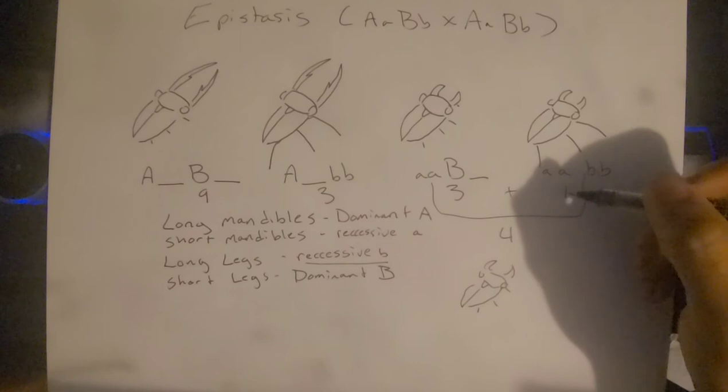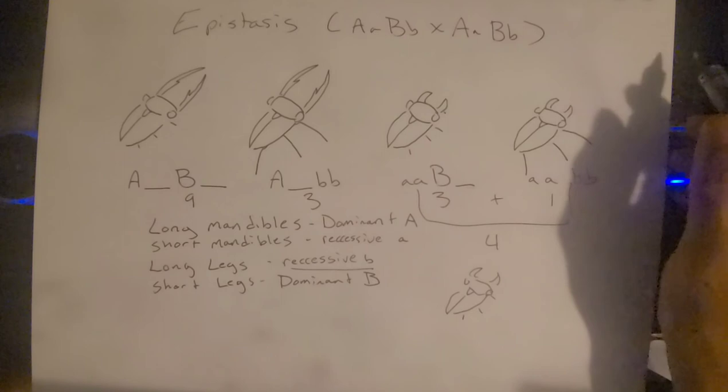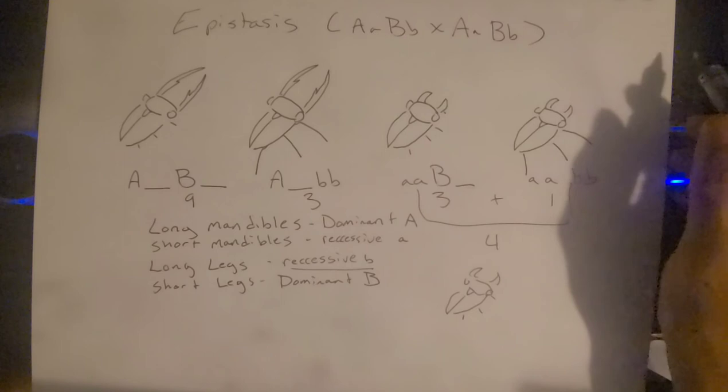So it'll just give an alternate sort of expression other than the expected 9-3-3-1 ratio. And this example here is a single recessive form of epistasis. Thank you.